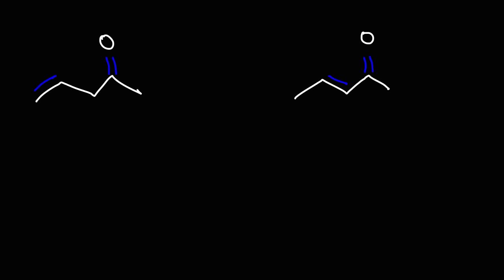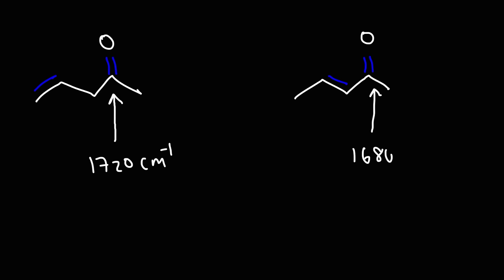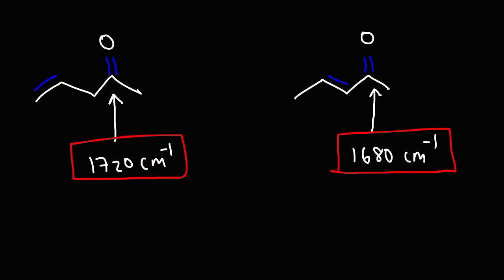Another topic to consider is conjugation. A ketone that is not part of a conjugated system will absorb IR energy slightly higher than 1,700 — around 1,720. For a conjugated ketone, it's going to absorb IR energy at a lower wavenumber, around 1,680. Conjugated carbonyl groups will absorb IR energy at a lower wavenumber.